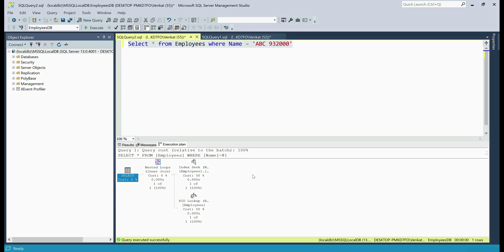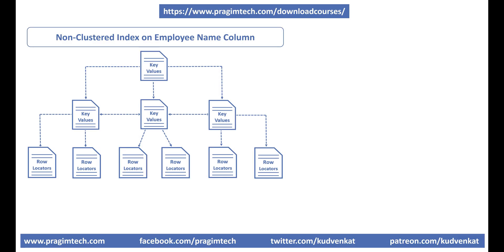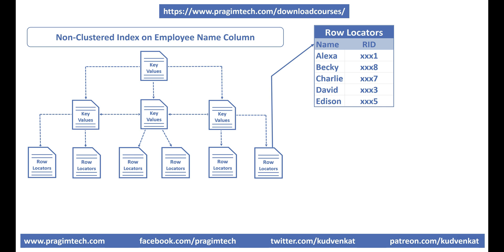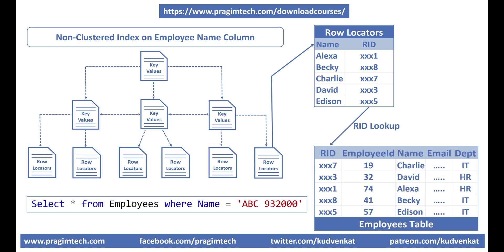RID stands for row ID. Why do we need this row ID lookup operation? Well, in the non-clustered index we only have the name column and row ID. But if you take a look at our select query, we want the rest of the columns as well — that is employee ID, name, email, and department, basically all the columns. So SQL Server uses this row ID from the index and looks up the respective employee record in the employees table, hence we need this row ID lookup operation here.